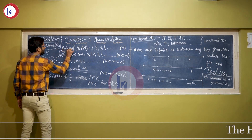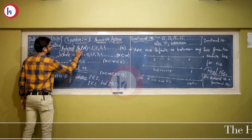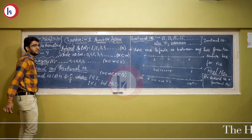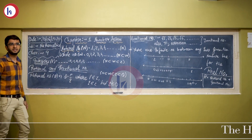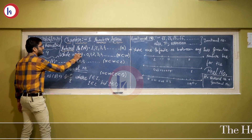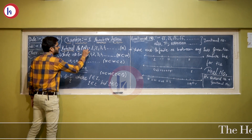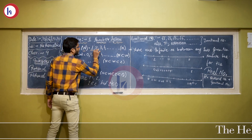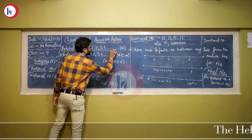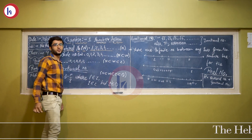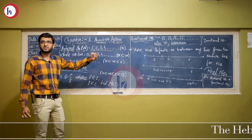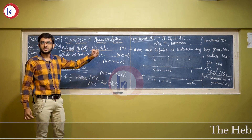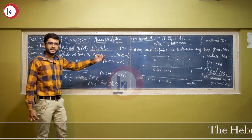The first part is natural numbers. Natural numbers are represented by the symbol N. They start with 1, 2, 3, 4 and go to infinity — they have no end.